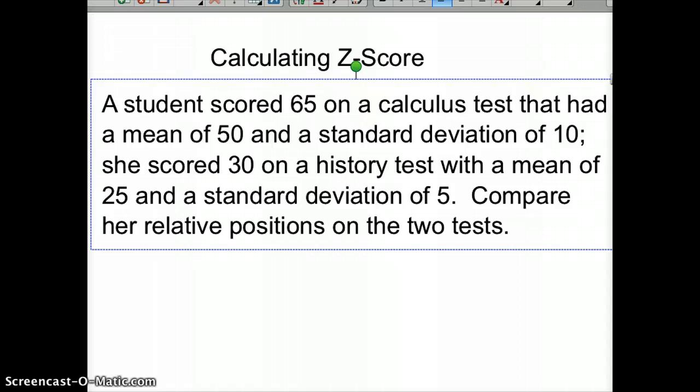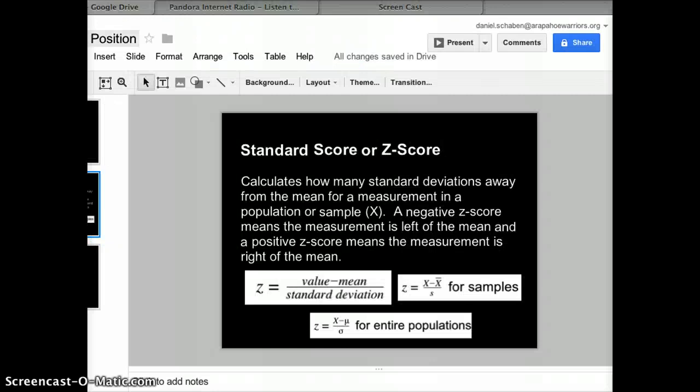We'll calculate the z-score. Let me pull those equations back up. Z-score is calculated by taking the value minus the mean divided by the standard deviation. For a sample, you use x-bar for mean and s for standard deviation. For the entire population, you use mu for mean and sigma for standard deviation.